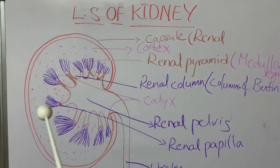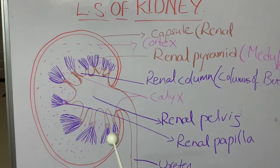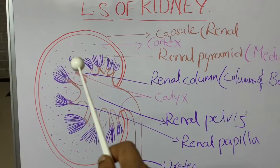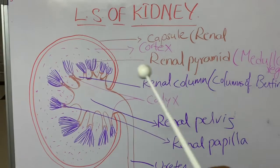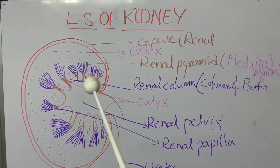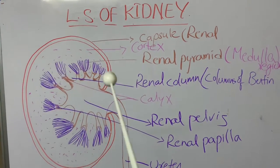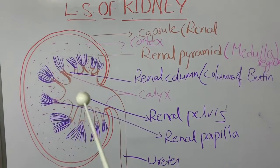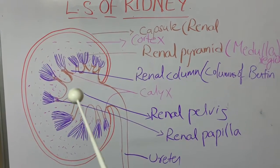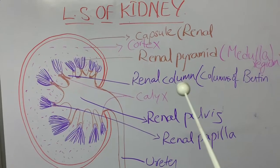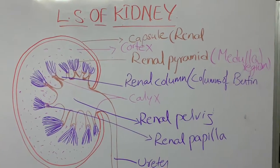The medullary region is divided into numerous cone-like or pyramid-like structures known as renal pyramids. These renal pyramids are not continuous — they are separated by projections of the cortex into the medullary region, which are known as renal columns or columns of Bertin.